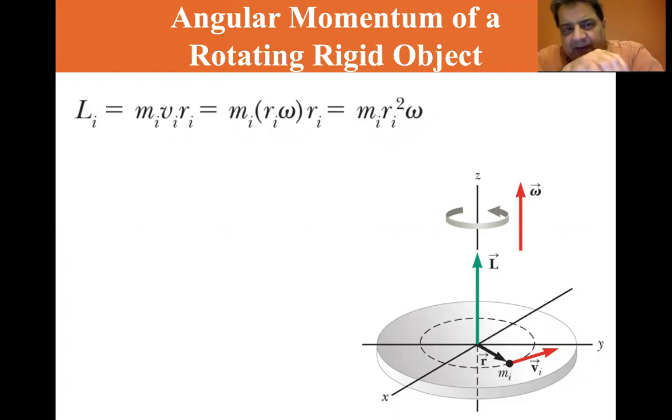Well, what is vi? Vi is equal to r omega. The omega is the same for all parts, but as you vary the radius, your tangential velocity will vary. So vi equals r omega, which leads to mi ri squared omega.